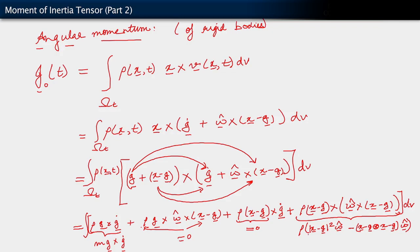Observe that the first term here is a vector because we have the scalar |x minus g|² multiplying ω̂. And here too we have a tensor, which is (x minus g) tensor (x minus g) — a dyadic product acting on another vector ω̂, which gives also a vector. When we collect terms from here, what we see is that we get for J₀ as a function of time one term which is the angular momentum of the center of mass.